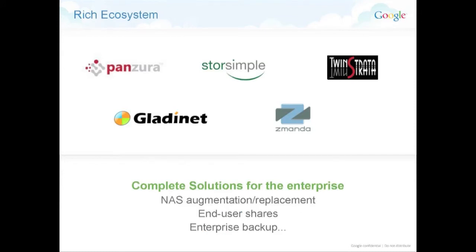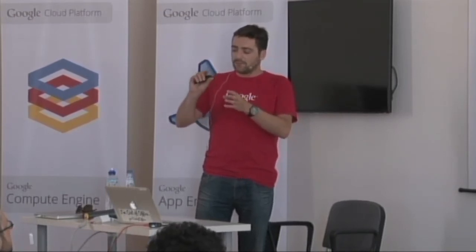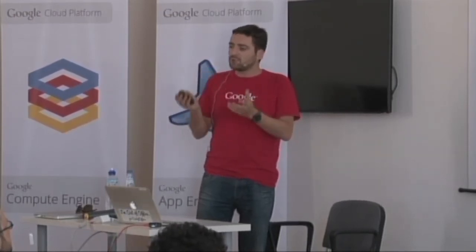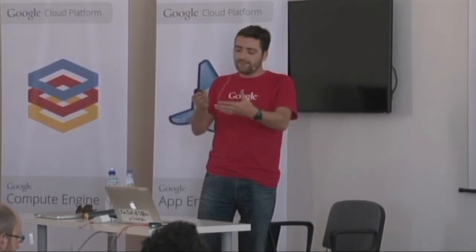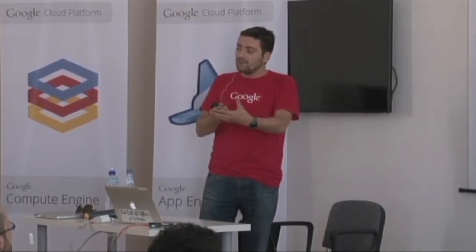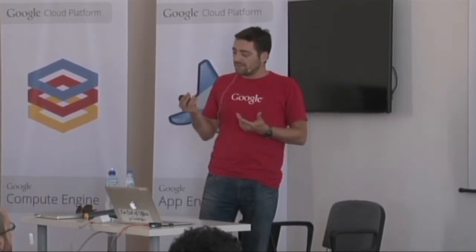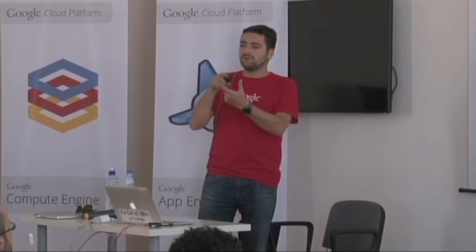These are partners building new solutions. For example, Panzura with Strata: they sell appliances to large companies. The companies put them in their data center, and they can then do network shares directly. From your Windows environment, you can connect to a network drive and not even know cloud storage is behind the scenes — they expose that protocol and do caching for fast performance.